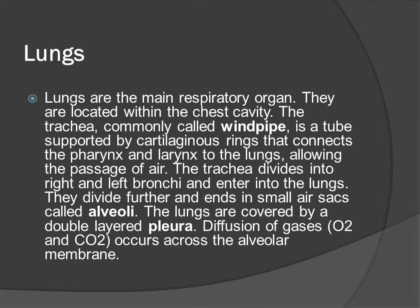Lungs are the main respiratory organ. They are located within the chest cavity. The trachea, commonly called windpipe, is a tube supported by cartilaginous rings that connects the pharynx and larynx to the lungs, allowing the passage of air. The trachea divides into right and left bronchi which enter the lungs, divide further and end in small air sacs called alveoli. The lungs are covered by a double layer called pleura. Diffusion of gases O2 and CO2 occurs across the alveolar membrane.